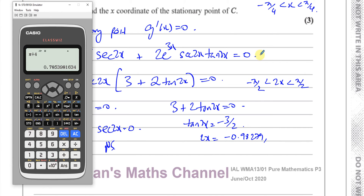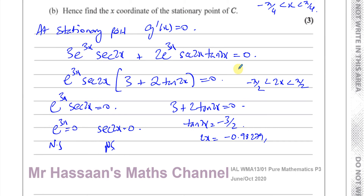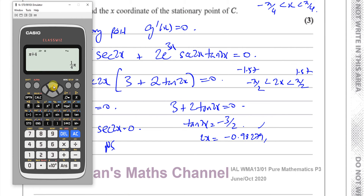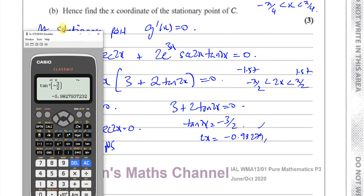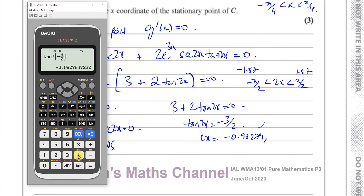Let's check whether this solution is in our range. Pi over 2 is approximately 1.57, so our range for 2x is minus 1.57 to 1.57. Our solution minus 0.9828 is within this range. If we add pi to that value, we get approximately 2.15, which is outside the range. So that is our only solution.